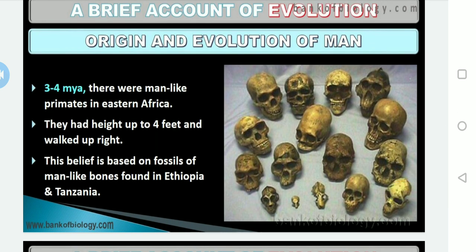About three to four million years ago, man-like primates existed in eastern Africa. We have obtained paleontological evidence such as skulls. They had a height of about four feet, walked upright, and this belief is based on fossils of man-like bones found in Ethiopia and Tanzania. Based on carbon dating, we can get the exact time period from the geological time scale.